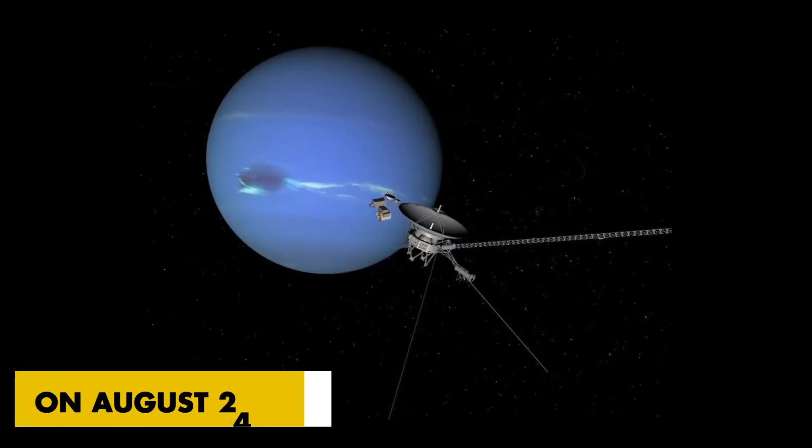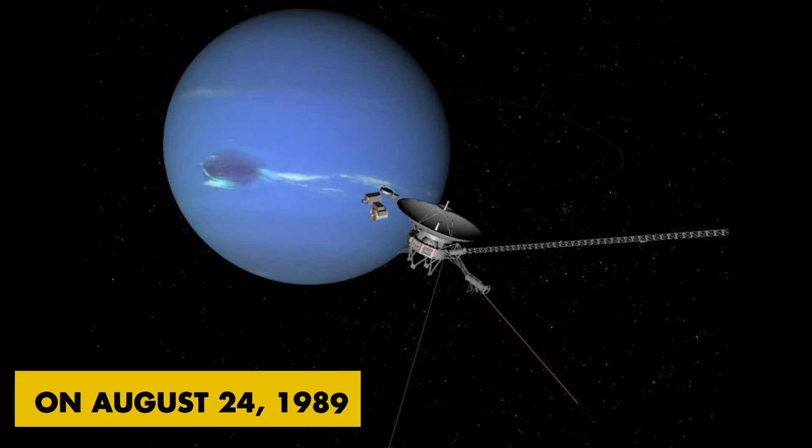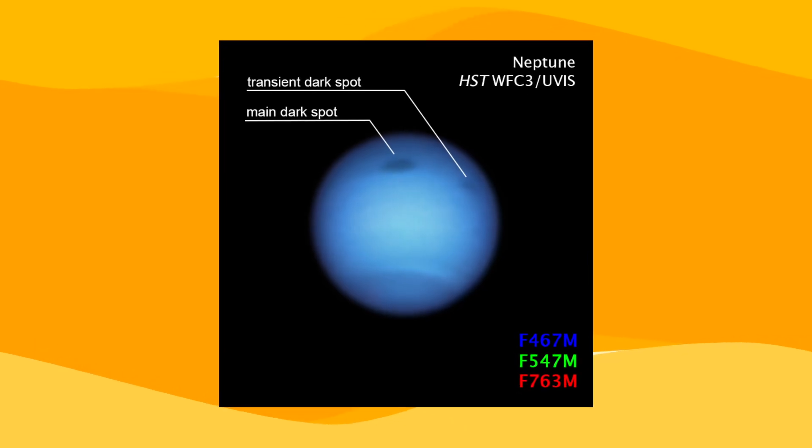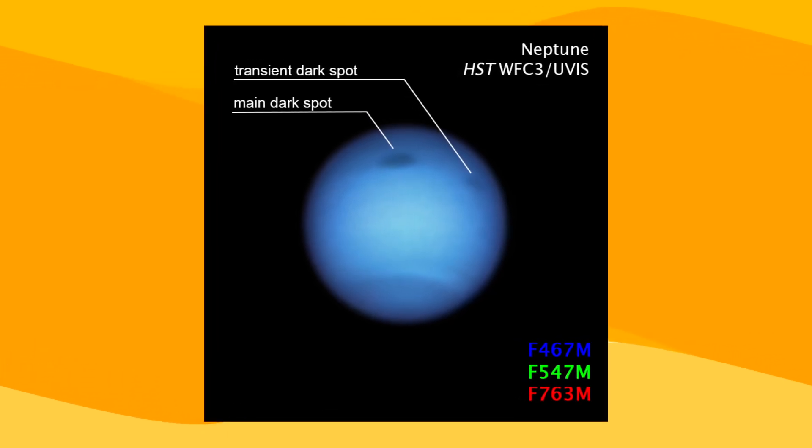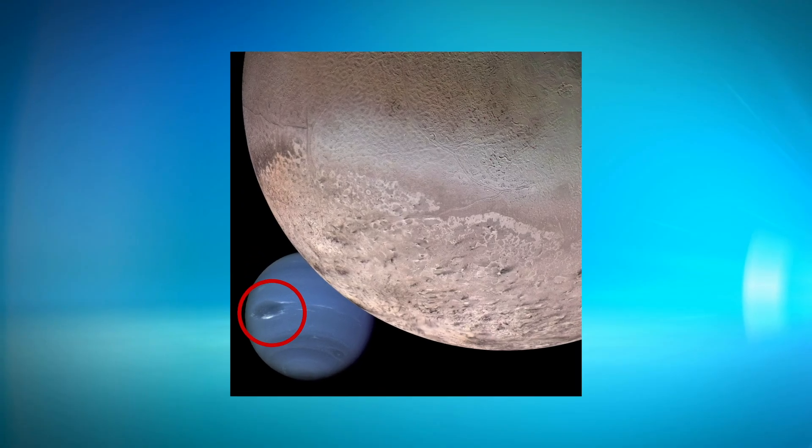On August 24th, 1989, Voyager 2 captured its first image of the planet just less than five days before it had its closest encounter with Neptune. The photograph showed the great dark spot, a storm in Neptune's atmosphere, and its stunning light blue cloud smear.